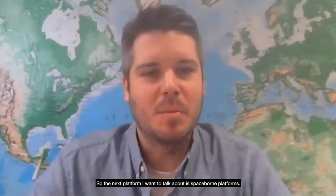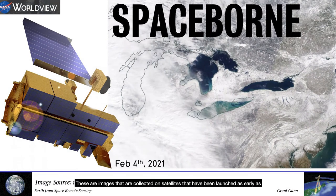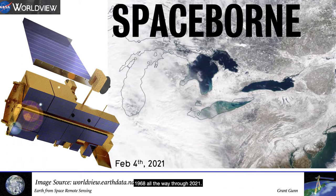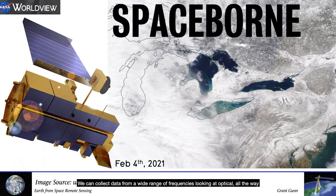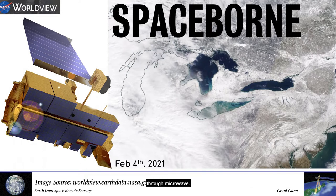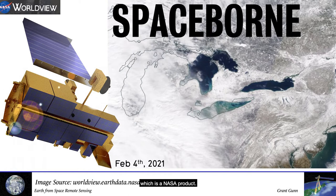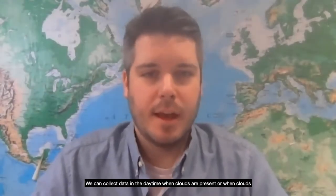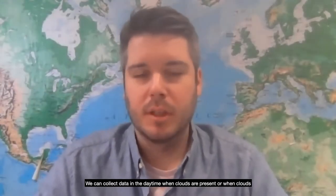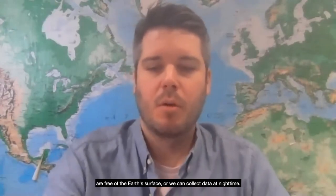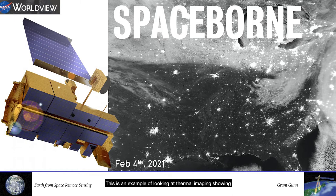The next platform is spaceborne platforms — images collected on satellites launched as early as 1968 all the way through 2021. We can collect data from a wide range of frequencies, from optical all the way through microwave. The example here shows optical data collected from the MODIS satellite, a NASA product. We can collect data in the daytime when clouds are present or clear, or at nighttime — this is an example of thermal imaging showing the urban heat island effect of cities.